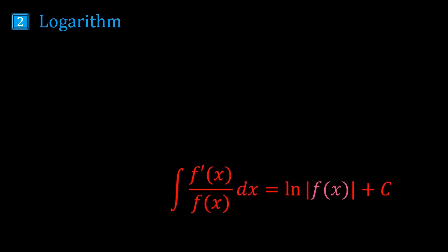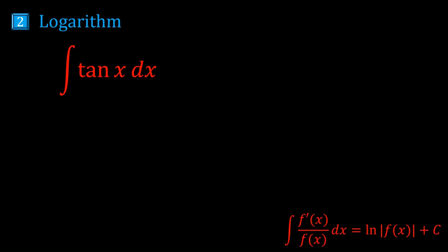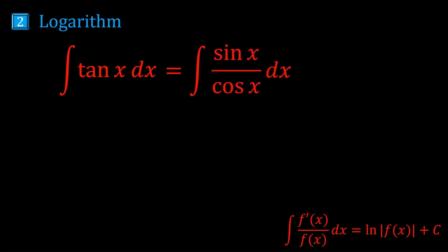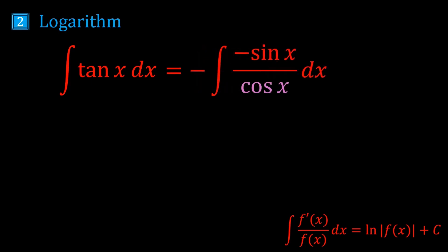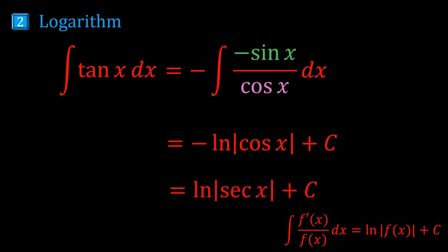Let's do a classic example: the integral of tan x. It's useful to write tan x as sin x over cos x. Now we have a fraction and can use the integral-of-1/x idea. The denominator is cos x, whose derivative is minus sin x. We almost have that at the top, so we put a negative sign in the numerator and a negative sign at the front. The answer is minus ln|cos x|, which is also equal to ln|sec x|. Since tan x is a standard trig function, you should memorize its integral.